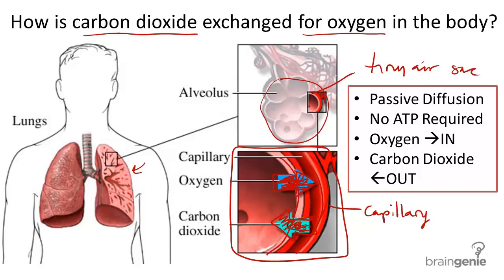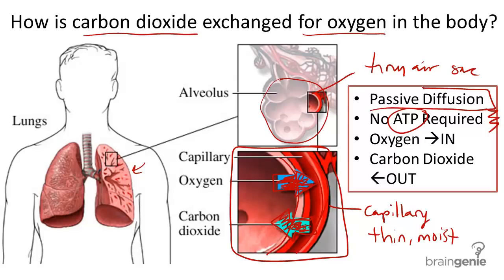How does it do this so easily? No ATP or energy is required for these substances to move in and out of these membranes. The walls of the capillary are thin and moist so that passive diffusion can actually occur quite easily. With carbon dioxide, water also leaves through the lungs, and oxygen at the same time can enter the capillaries.